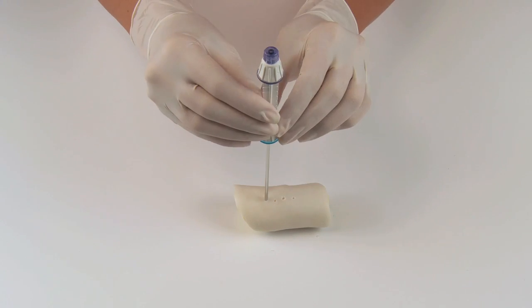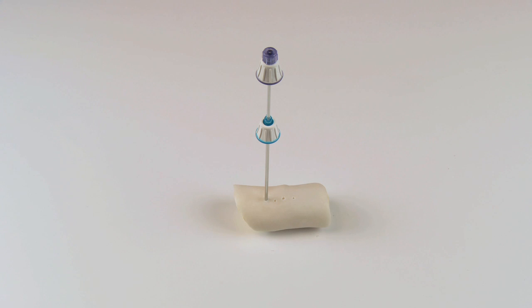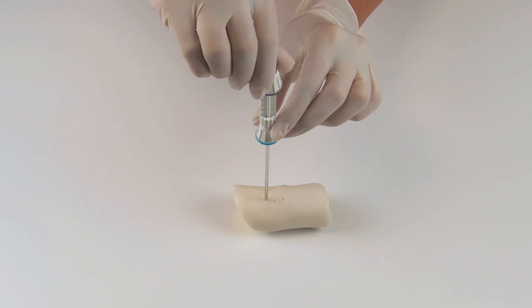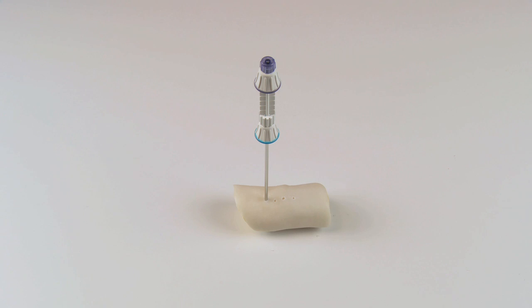Break off the number of indicators needed to reach the target lesion. Each indicator is 5 millimeters. Advance the biopsy needle with the stylet inserted to the stop. The tip of the biopsy cannula is now at the targeted lesion.